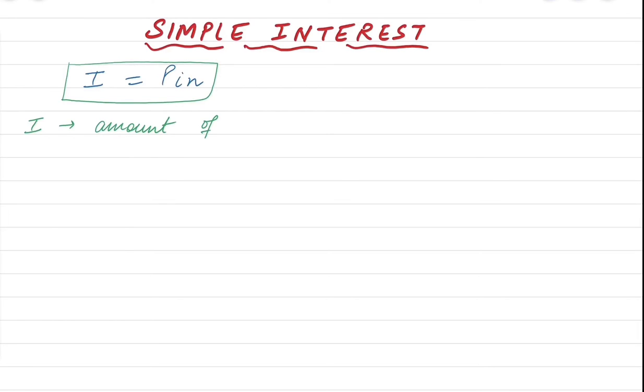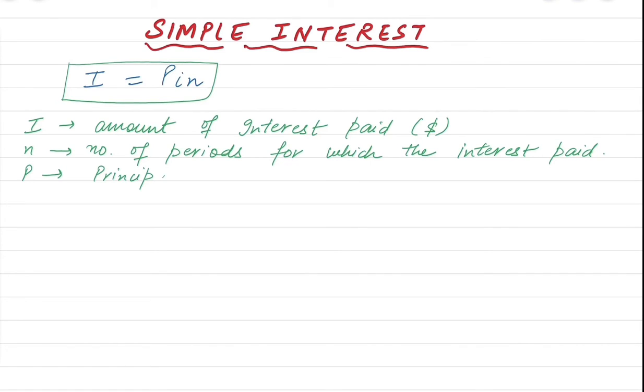I is the amount of interest paid, and this is calculated in dollars. N is the number of periods for which the interest is paid. P is the principal amount of the money invested or borrowed, also calculated in dollars.